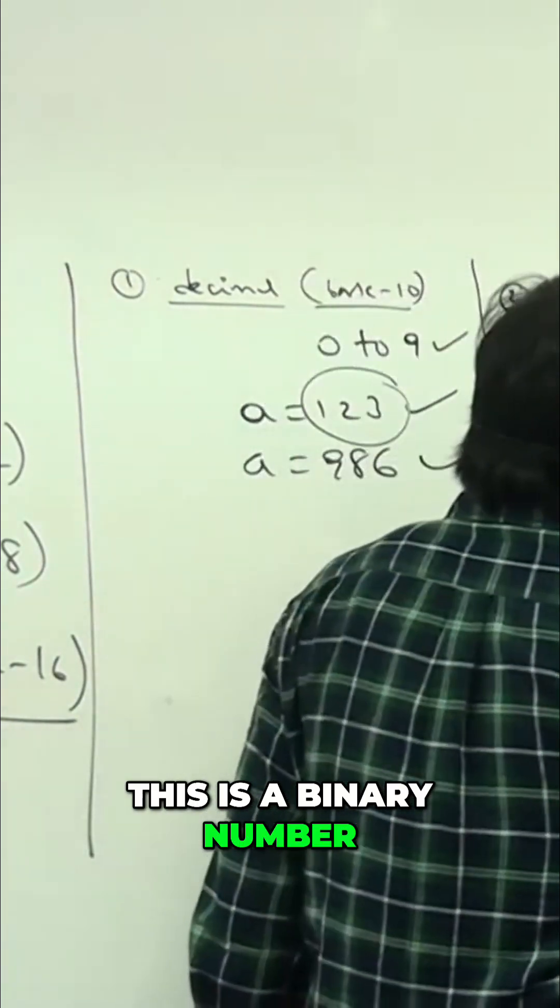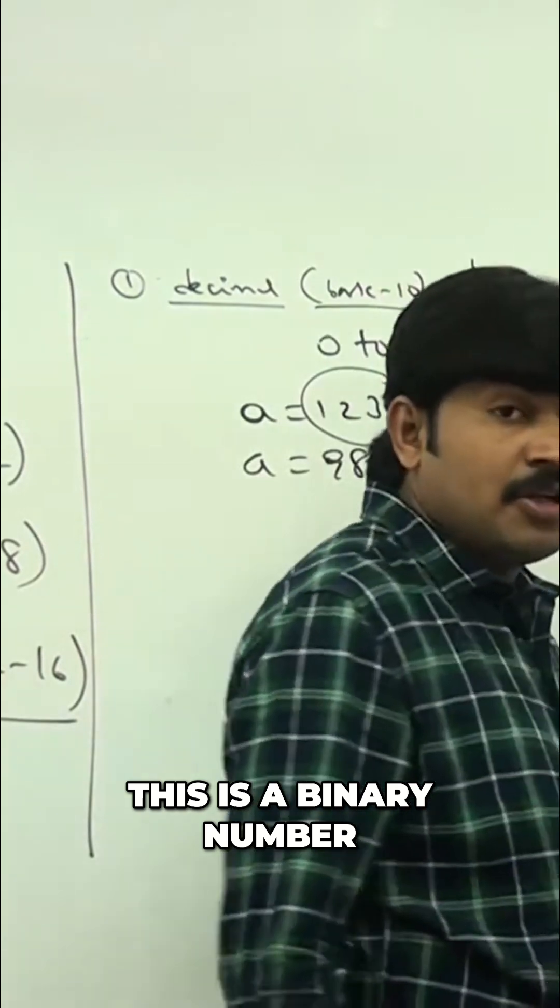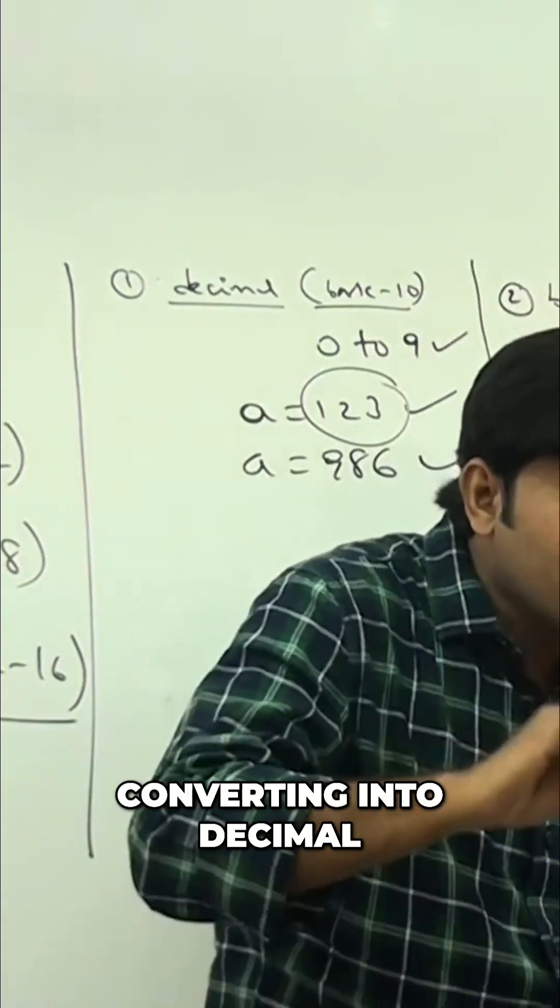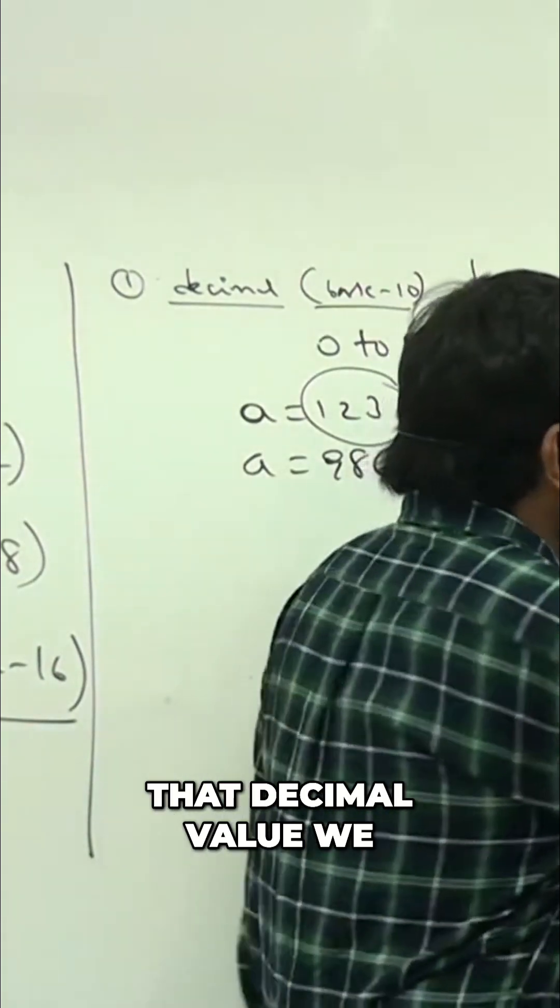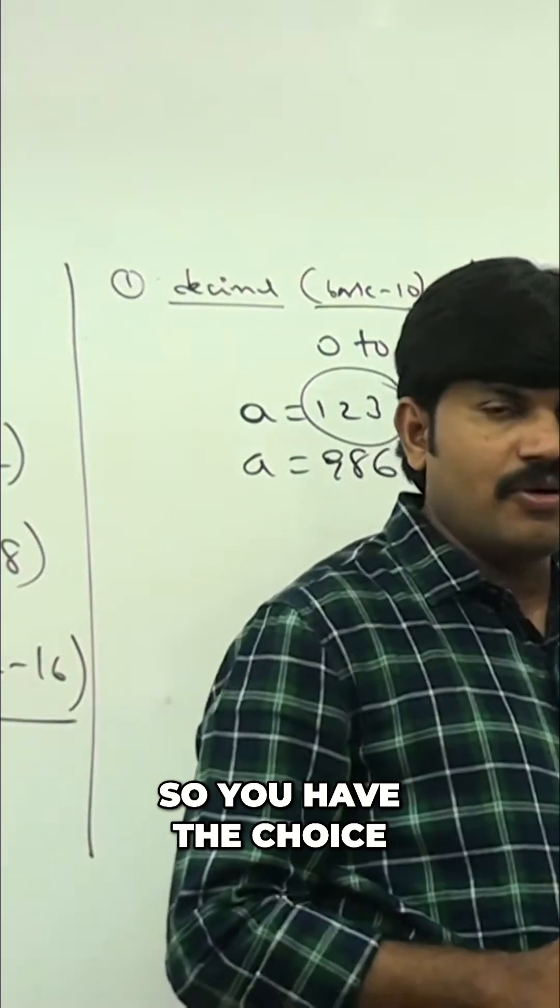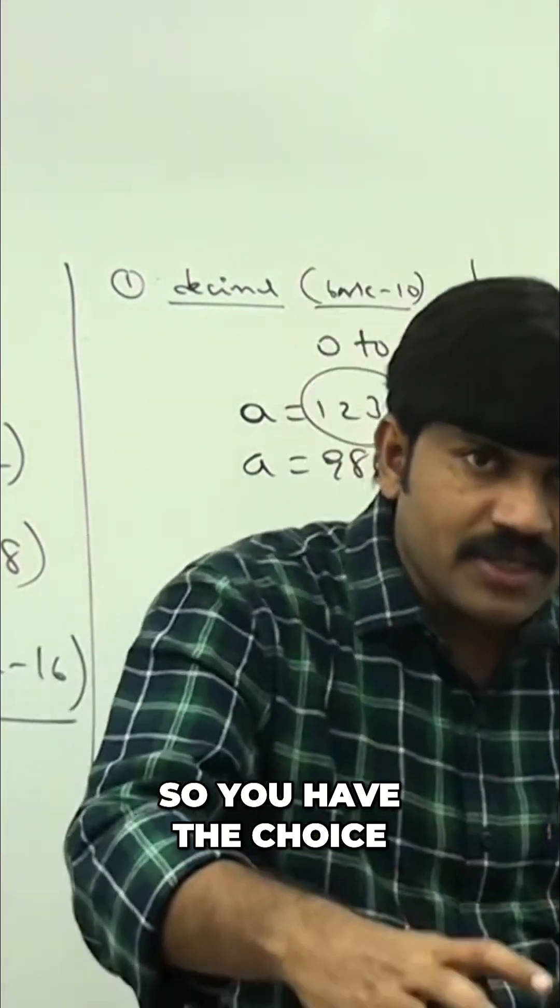This is a binary number converting into decimal. That decimal value we are going to get. So you have the choice to represent values in binary or other formats.